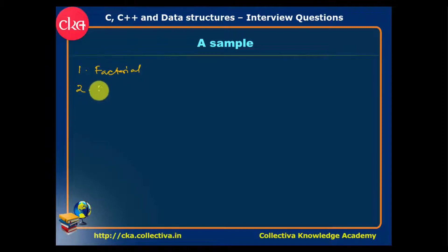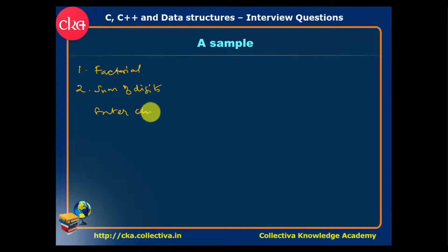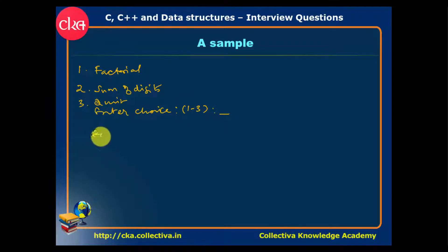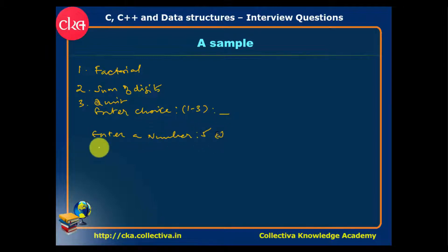The menu has two options: one for factorial and two for sum of digits. Enter your choice — one or two. After selecting, enter your number. For example, entering 5 gives the result. The result is displayed in the menu.